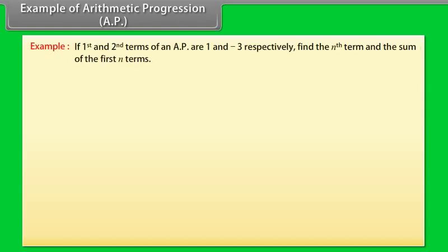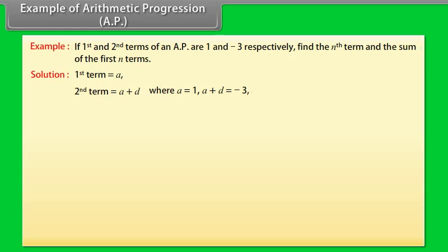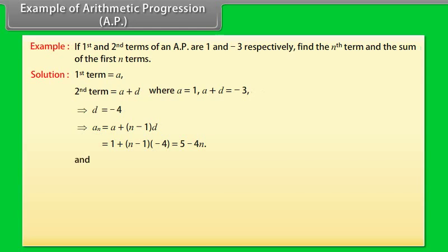Example: If the first and second terms of an AP are 1 and −3 respectively, find the nth term and the sum of the first n terms. Solution: Let first term A = 1, second term = A + D = −3. It implies D = −4. Therefore AN = A + (n−1)D = 1 + (n−1)(−4) = 5 − 4n. And Sn = n/2 × (A + An) = n/2 × (1 + 5 − 4n), which gives Sn = n(3 − 2n).